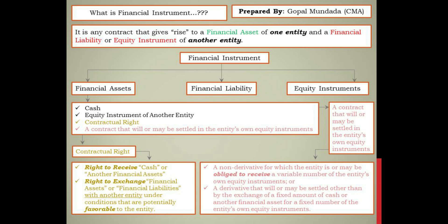We must understand what a financial instrument, financial liability, financial asset, and equity instrument are so we can answer questions in the CMA final examination. There are chances of questions being asked in question number 8 for 4 marks, or from question 2 to 7 for 8 marks. Now, the definition of financial instrument: it is a contract that gives rise to a financial asset of one entity and a financial liability or equity instrument of another entity.